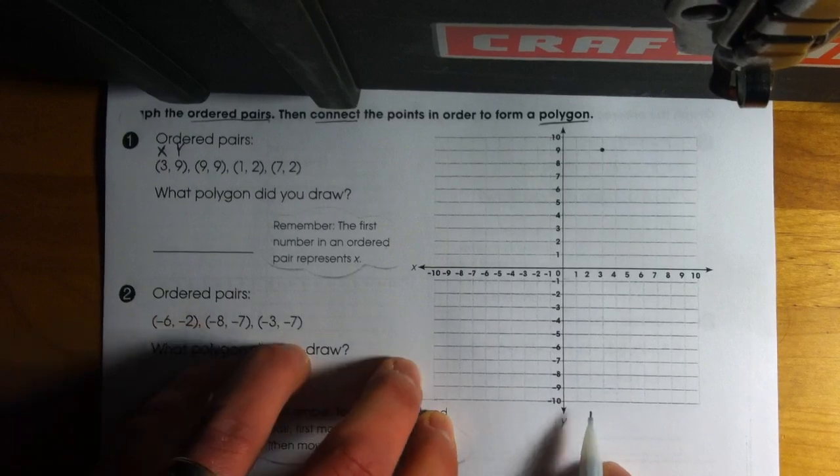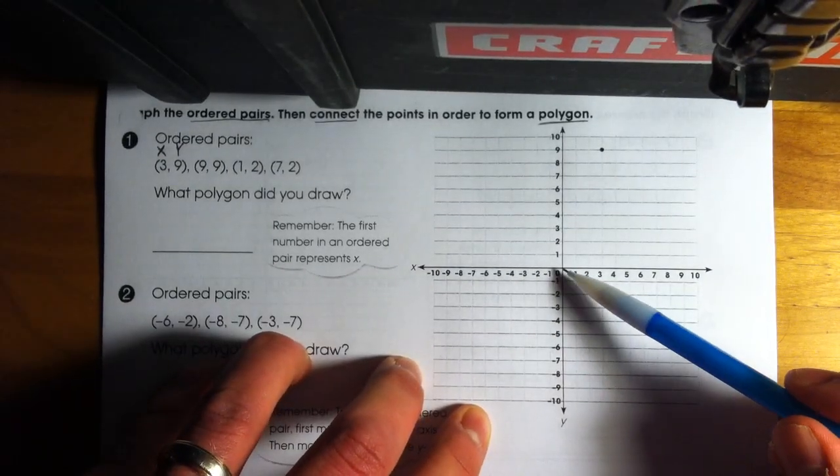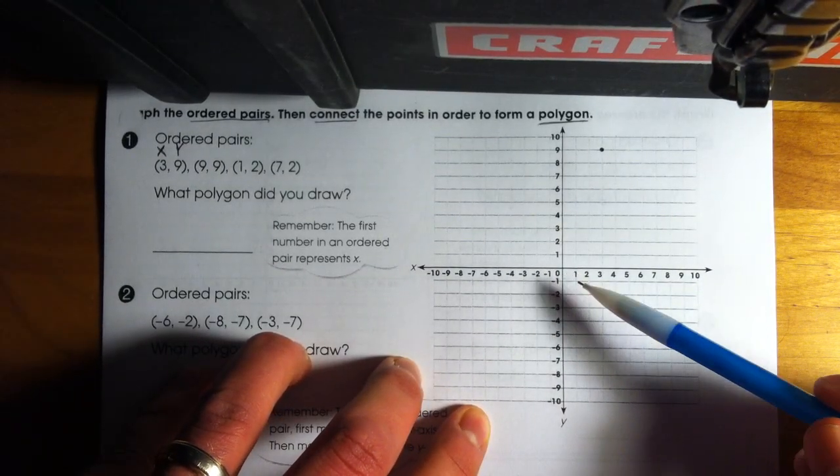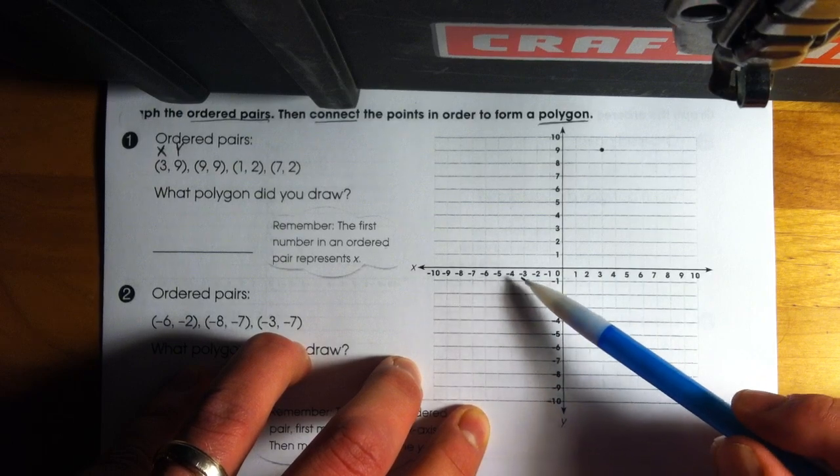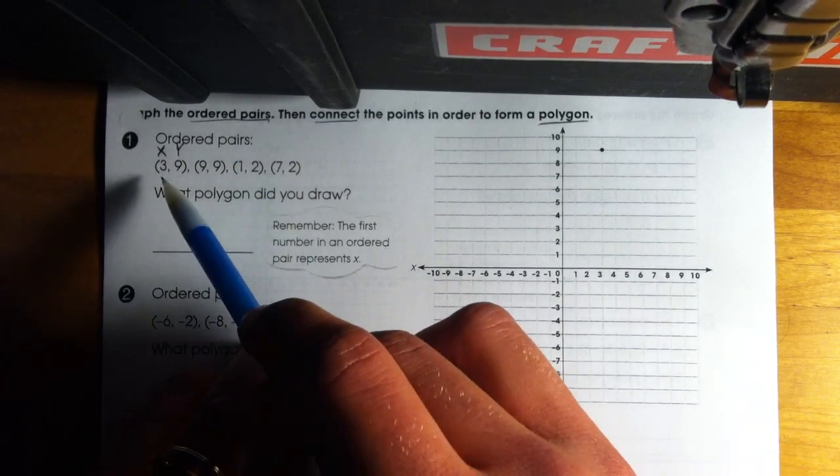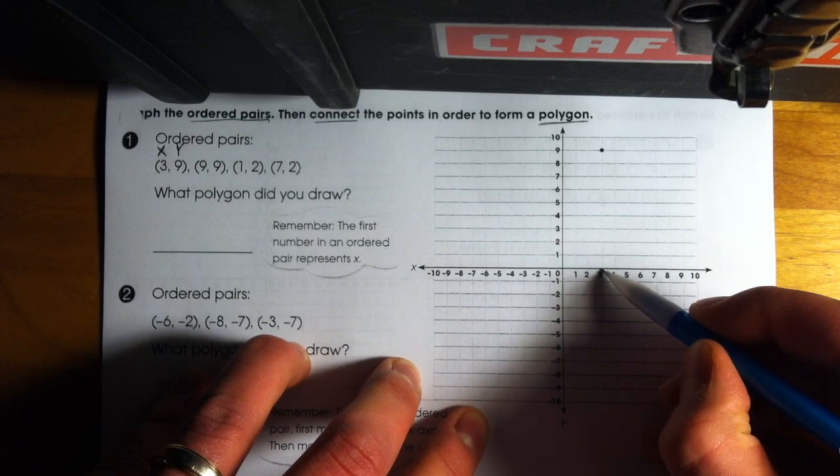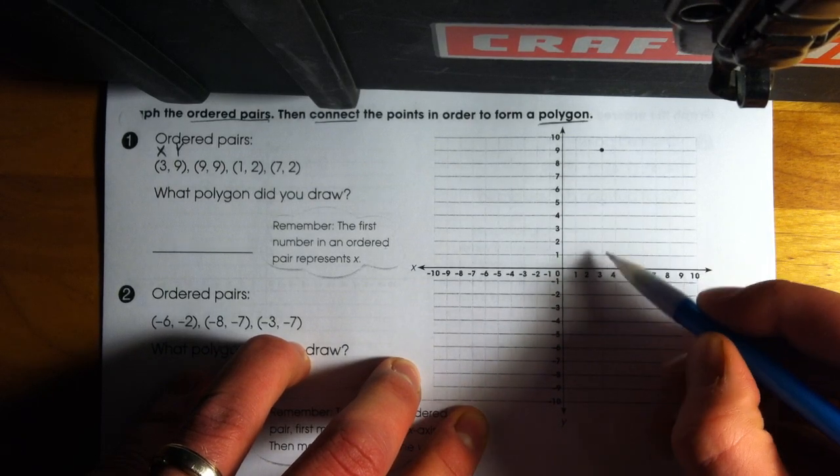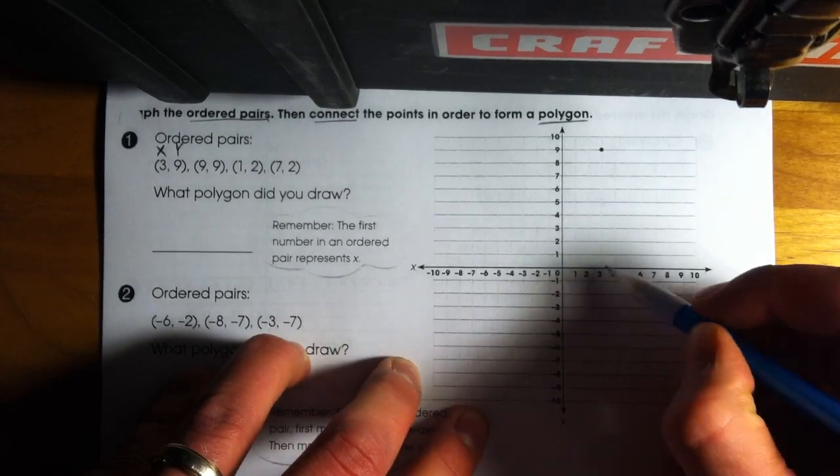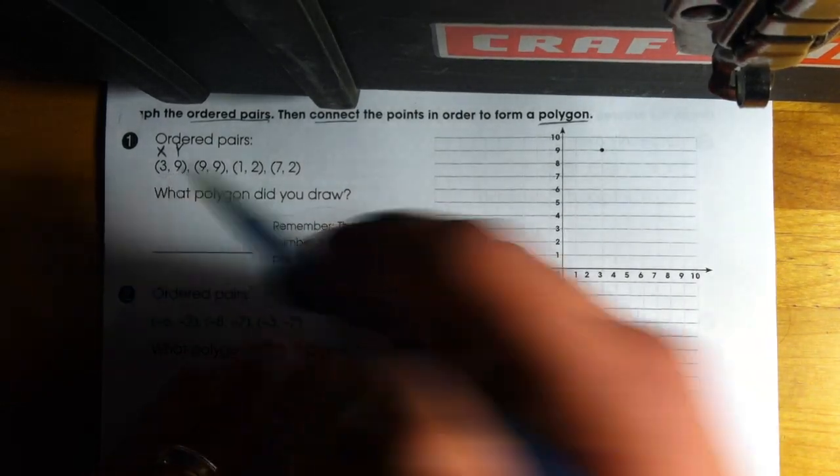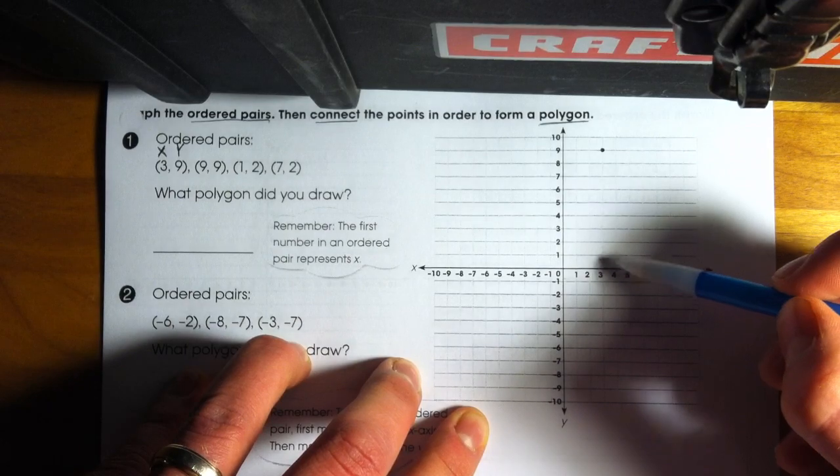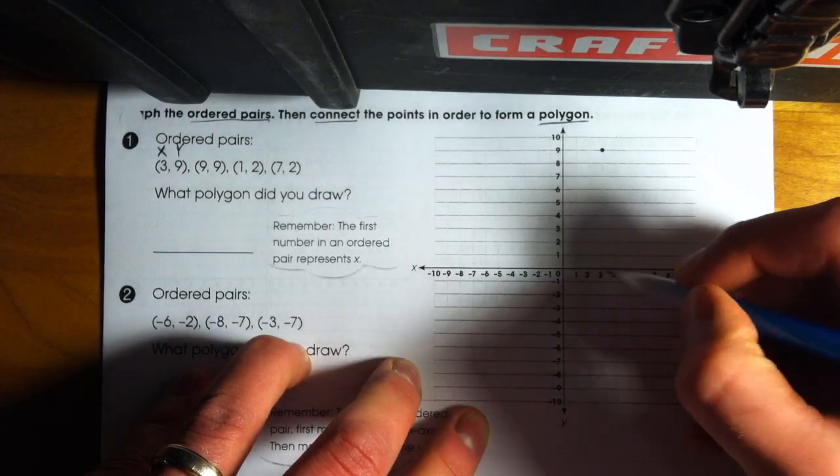So let's go ahead and put that on our coordinate grid. In order to do so, I always start right here at the origin, and then I identify am I going to go to the left or to the right first? Well, since I have a positive 3, that tells me I'm going to move to the right 1, 2, 3 places. Now I don't put a mark there yet until after I also plot my y-coordinate. So my y-coordinate represents a 9. It's a positive 9, so that tells me I'm going to move up along my y-axis 9 spaces.